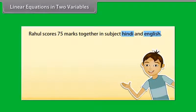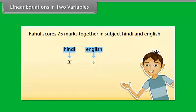Here you can see that the marks of neither of the subject are known. That is, there are two unknown quantities. Let us use X and Y to denote them. So, the marks scored in Hindi is X and the marks scored in English is Y.